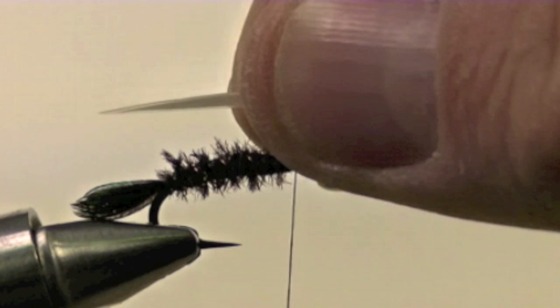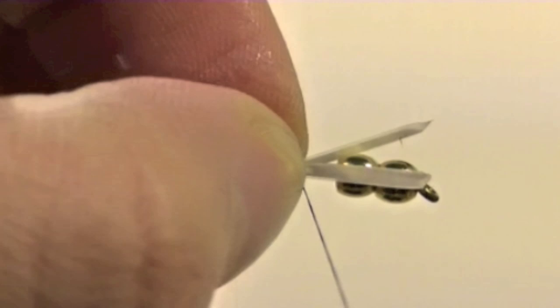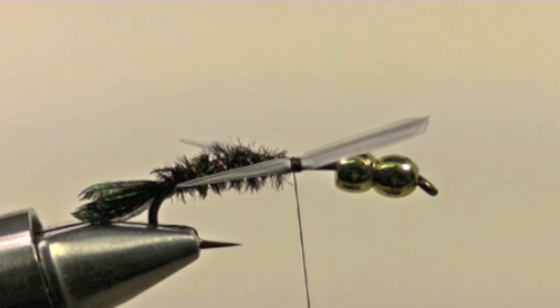Next we will take two white goose biots. Tie one to each side with the point of the biot going back to about the bend of the hook. Clip off the tag end of the biots.